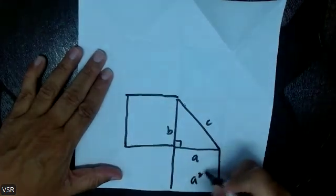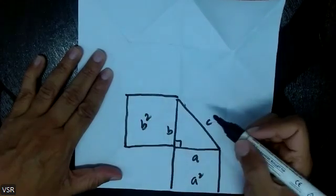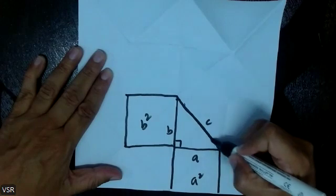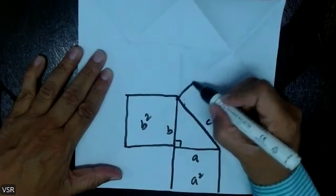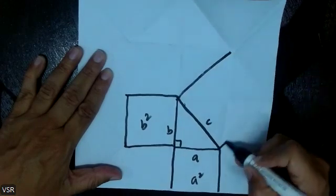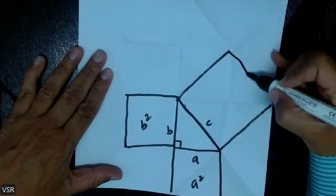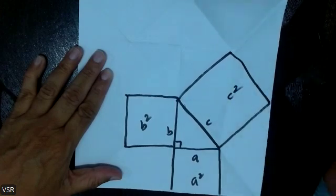See, this becomes your A square. This will become B square. Now you see the beauty on the hypotenuse here. So you see a bigger square is already formed. Can you see this? So beautifully it has formed. Now this becomes your C square.